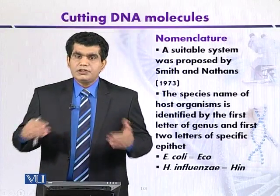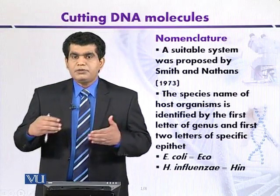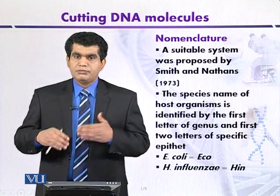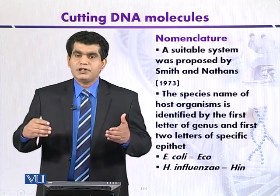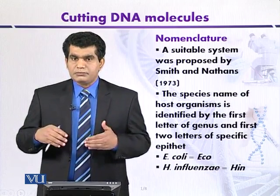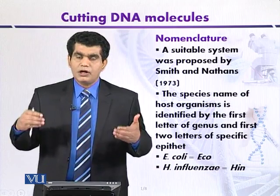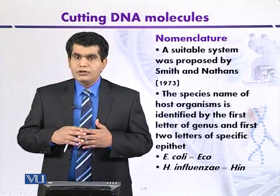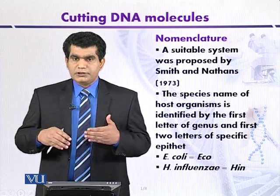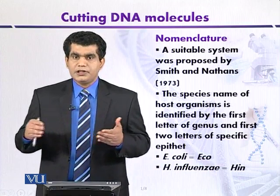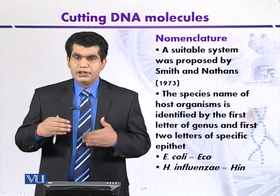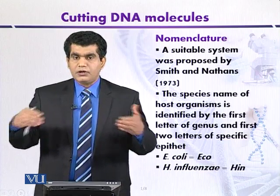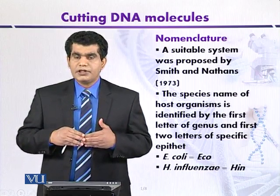After the discovery of a large number of type 2 restriction endonucleases, scientists proposed that there must be some sort of naming mechanism — a nomenclature of restriction endonucleases. One of the first proposals was given by Smith and Nathans in 1973. We are now going to discuss the key features of this nomenclature of restriction enzymes.